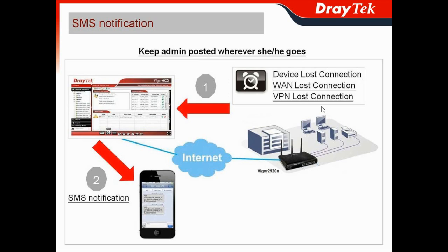So what kind of situation will the Vega AC-SSI send the SMS to the admin's cell phone? It depends on the alarm. For device loss connection, it depends on what kind of gateway model you adopt. For the Vega 2920 series, it's a dual model, so it is divided by when one loses connection or when two lose connection.